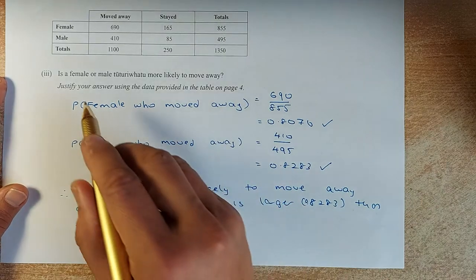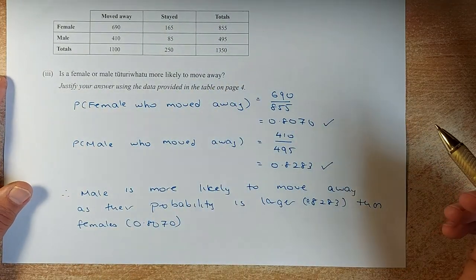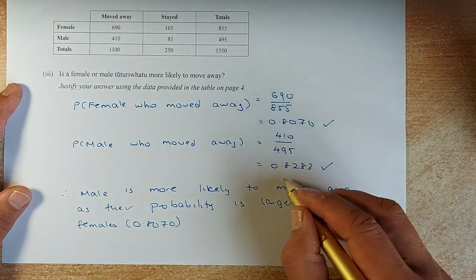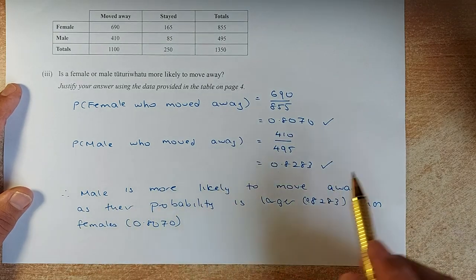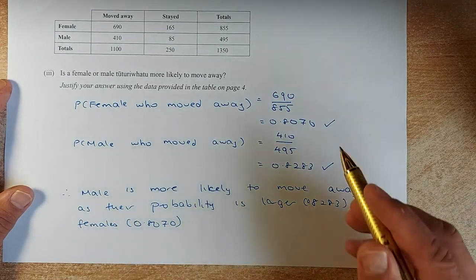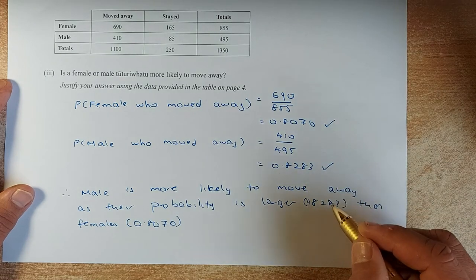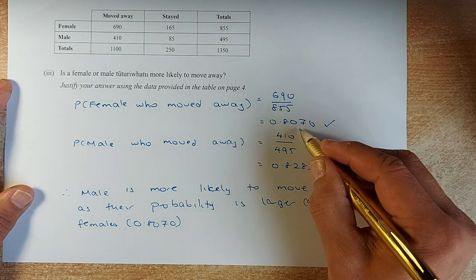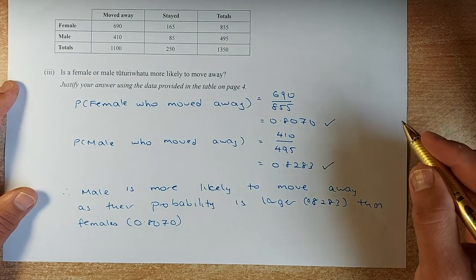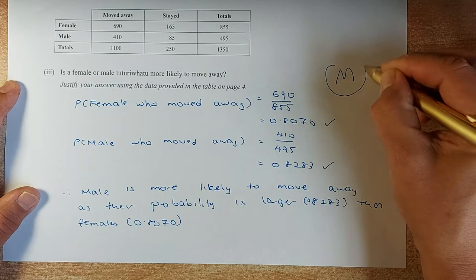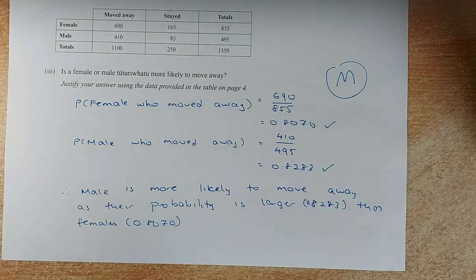Now, the question asks you who is more likely to move away? Is it male or female? You can see the male probability is higher. So you answer male is more likely to move away as their probability which is 0.8283 is larger than the probability of female which is 0.8070. If you can answer that, that will give you a merit.